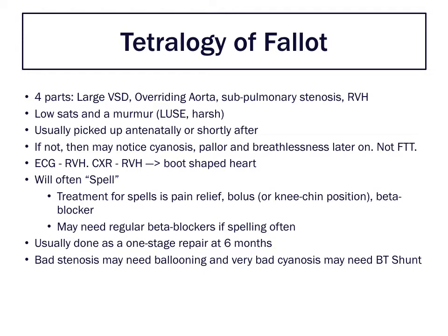Secondary to this, you get right ventricular hypertrophy, which further amplifies the system - increasing pressure on the right side of the heart gives more ability to pump from right to left, from the right ventricle to the aorta. This presents with low saturations because deoxygenated blood on the right side is bypassing the lungs and going straight into the aorta, resulting in lower oxygen saturations.